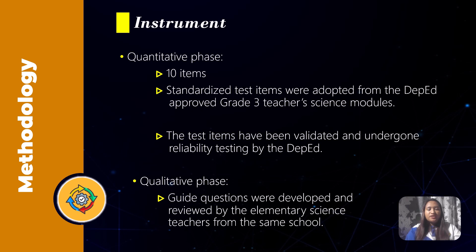The instrument used in the quantitative phase consisted of 10 standard diet test items, which were adapted from the DepEd approved grade 3 teacher science modules. This ensures that the items were already valid and reliable. Meanwhile, the guide questions used in the semi-structured interview during the qualitative phase underwent construct validation from 3 professional elementary teachers handling science subjects in the same school. This validation aims to accurately measure the constructs of the study that are intended to measure. The teacher suggestions were incorporated into the final structure of the guide questions.